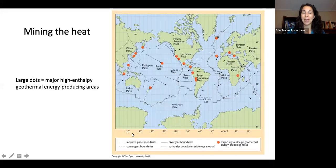If we look at where geothermal heat is located, these large dots are major high enthalpy geothermal producing areas. We have some where the China plate is, on the west coast of the U.S. and South America, in Iceland, and in various places in Europe and Africa.